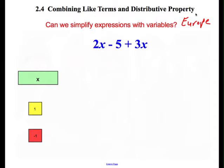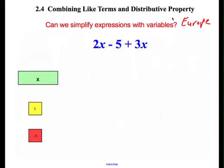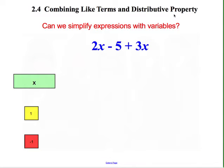All right, here we go. Let's take a look at what's happening here in 2.4. Let's get rolling on this and talk about combining like terms and distributive properties. We're going to use this the rest of the year. So really take your time practicing this. Make sure you've got it because it's not going to go away. We need to have this every single section for the rest of the year. Can we simplify an expression with variables?